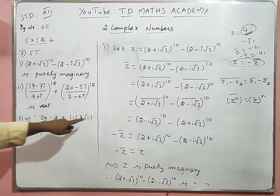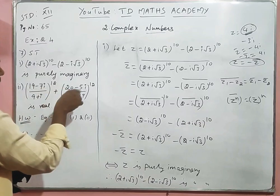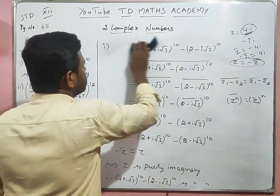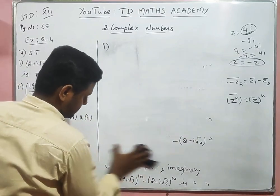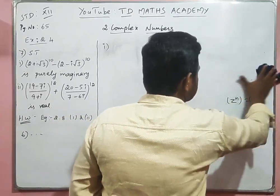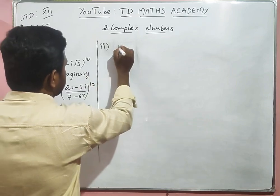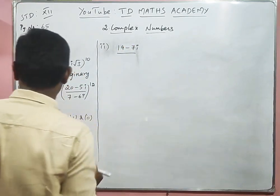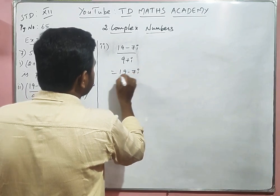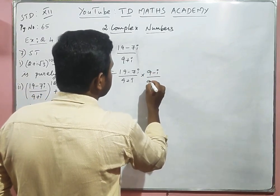Now the second sum. If you have a complex number and its conjugate in subtraction, it is always purely imaginary. Let's simplify: (19 − 7i) ÷ (9 + i). To simplify, take the conjugate of the denominator, which is (9 − i), and multiply numerator and denominator by it.